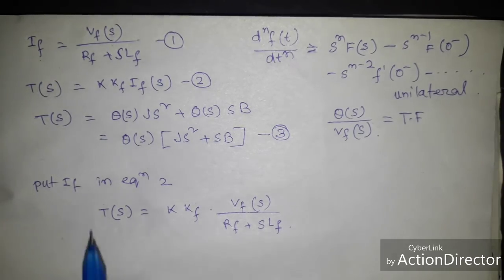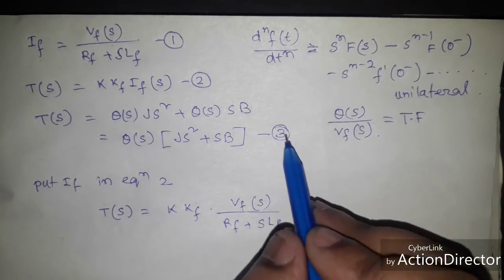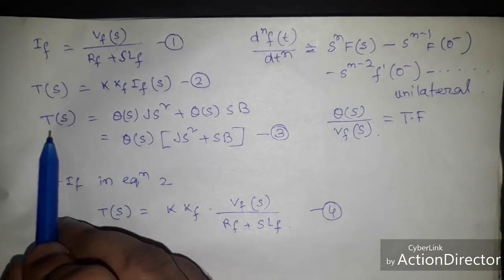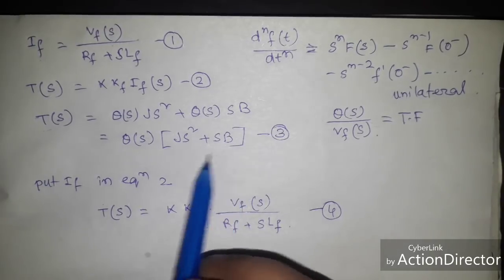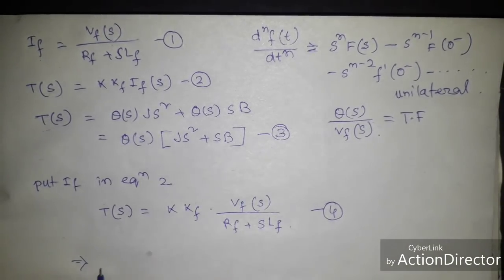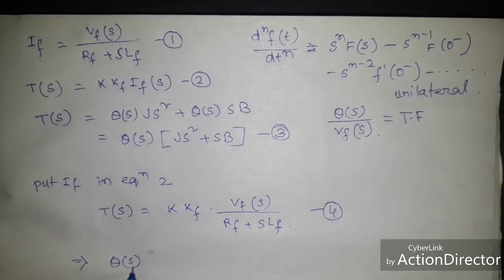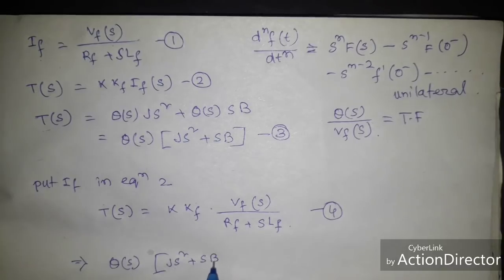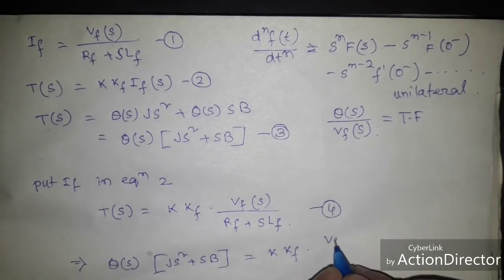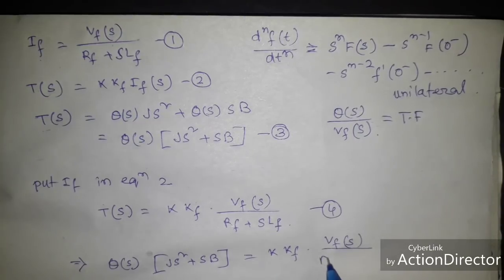Now we put equation number 3 in equation number 4, because we already know θ(s) into J s² plus s B equal to K Kf into Vf(s) divided by Rf plus s Lf.